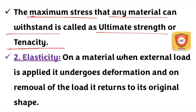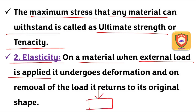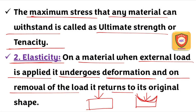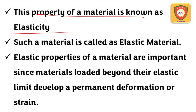The next term is elasticity. When an external load is applied, the material undergoes deformation. When the load is removed, the material returns to its original position — this property is called elasticity. Such a material is called an elastic material.